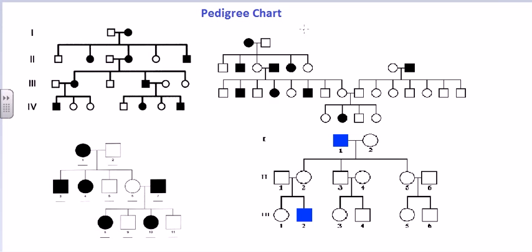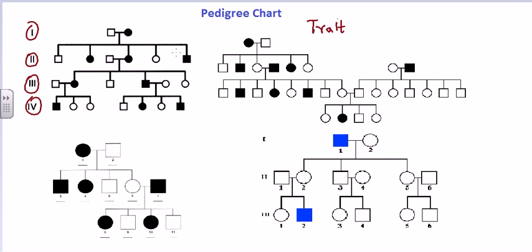First, you need to understand the concept of trait. A trait is a characteristic carried from one generation to another — for example, height can be a trait. In this picture you can see four generations depicted with all their symbols. Before continuing, I recommend you understand the basics of pedigree chart symbols, which I've covered in earlier videos on my YouTube channel.